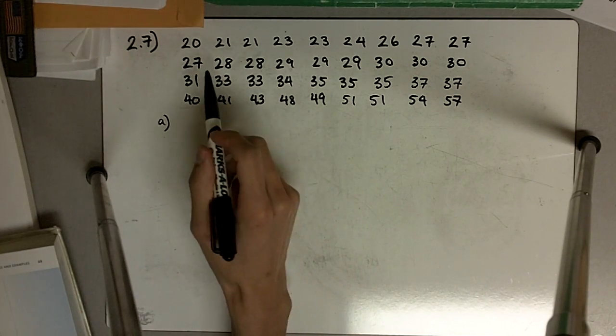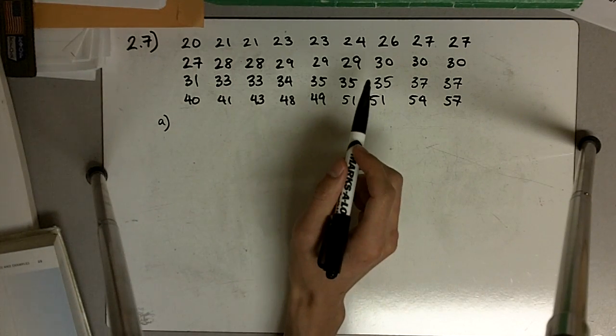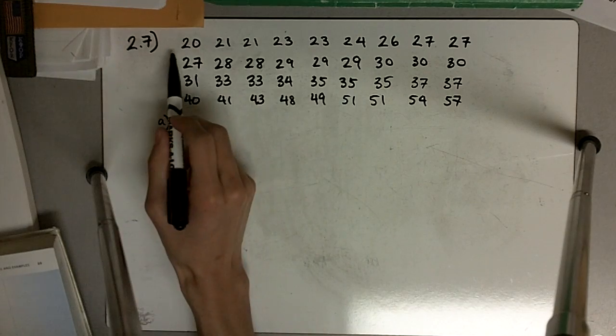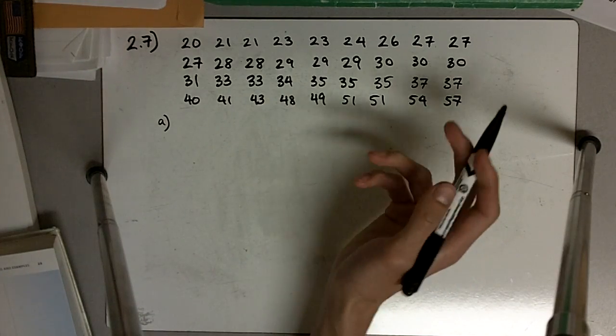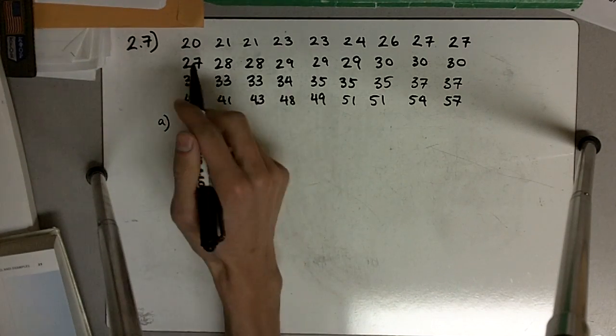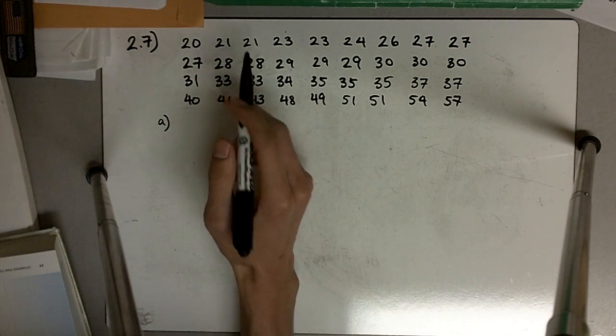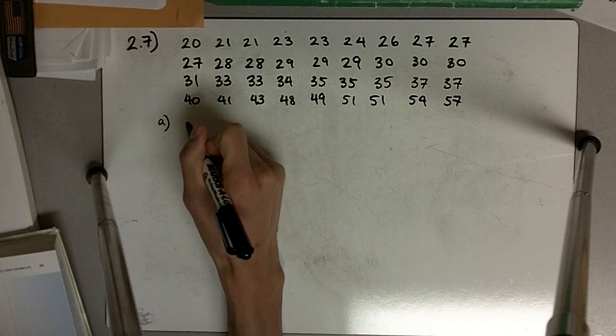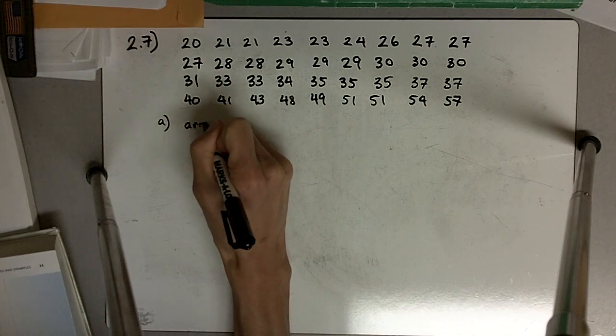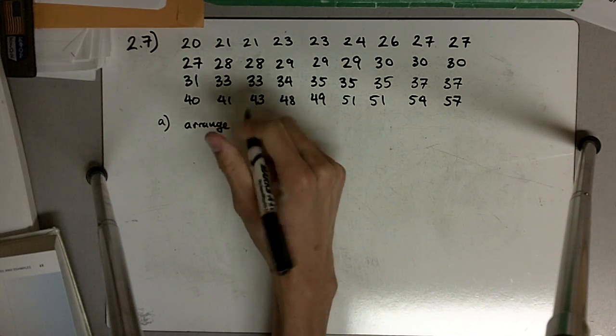What I've already done here is I've arranged all 36 measurements from smallest to largest. You will need to do that on your own, but in order to save time for this video, I've already arranged those. So remember, step 1 is to arrange numbers smallest to largest.